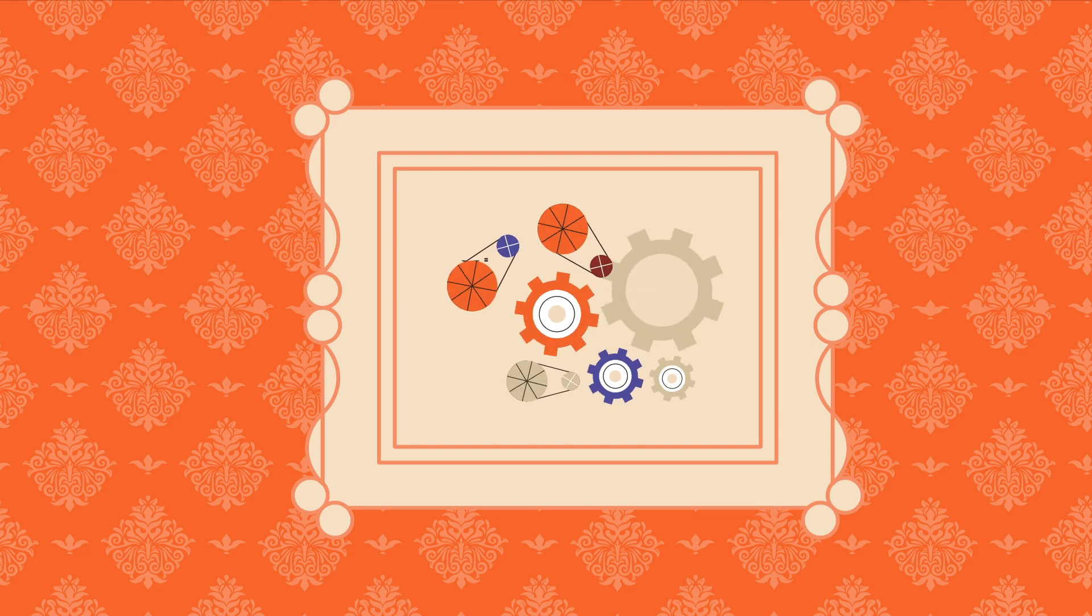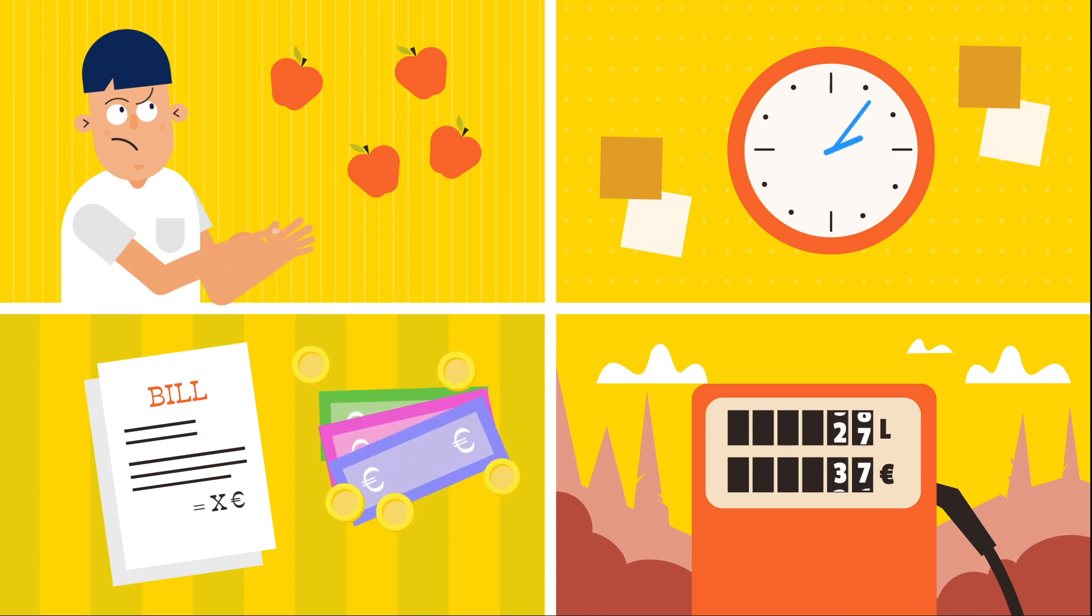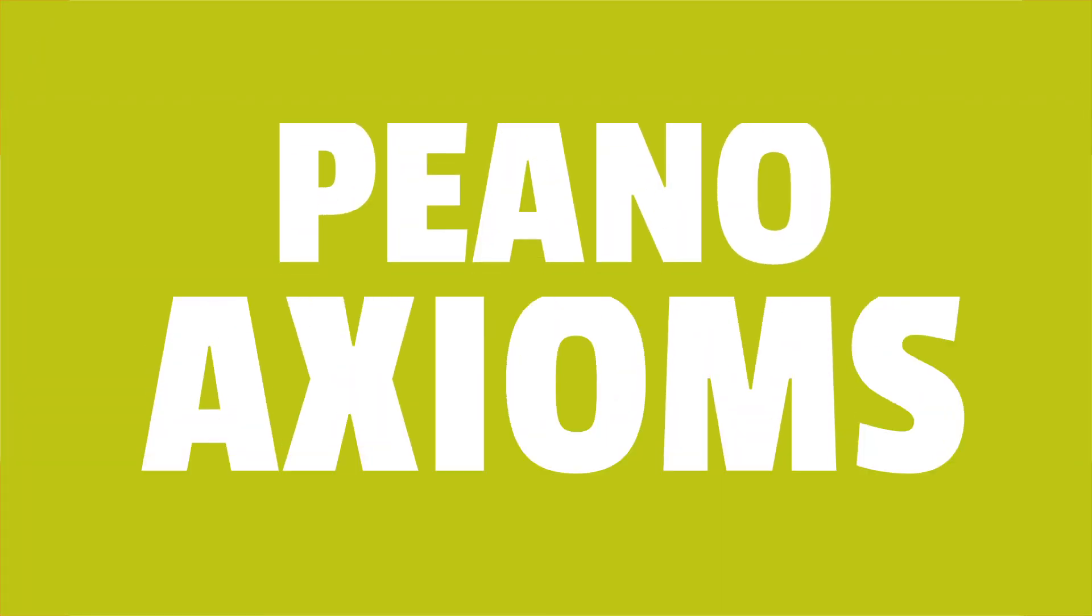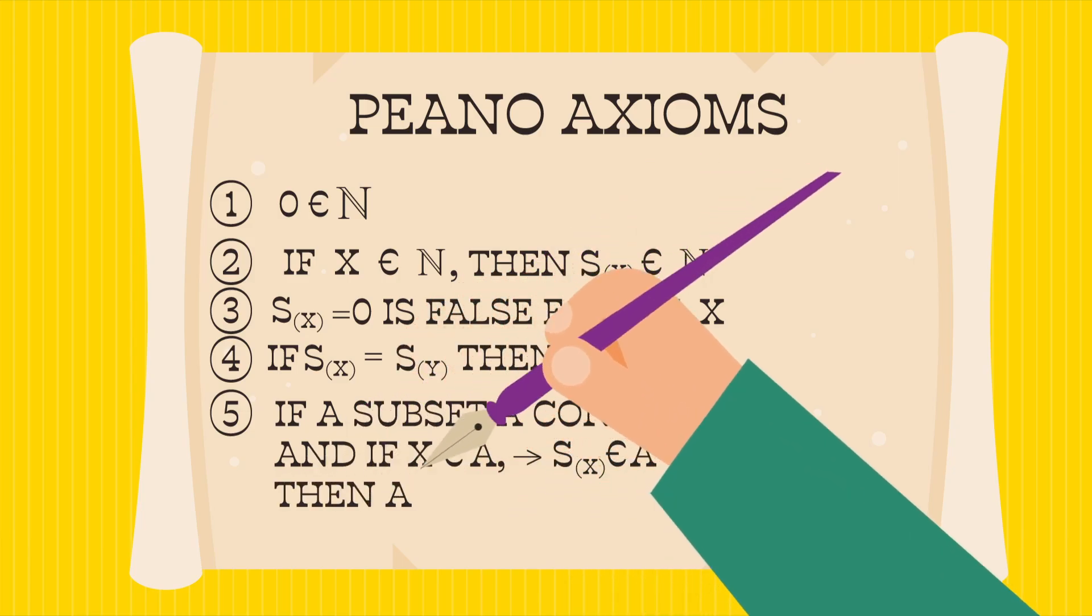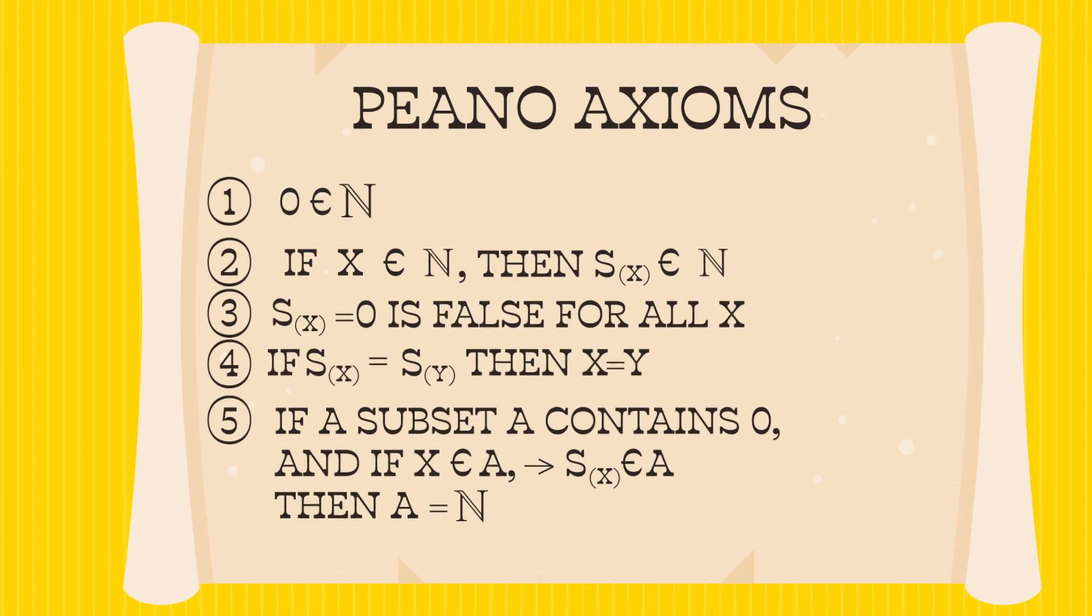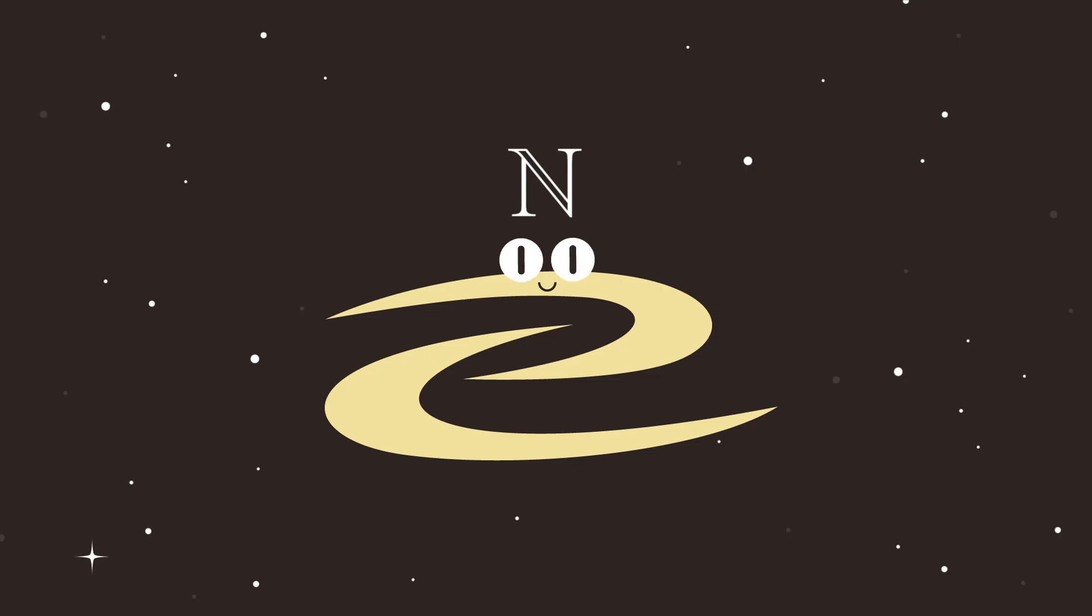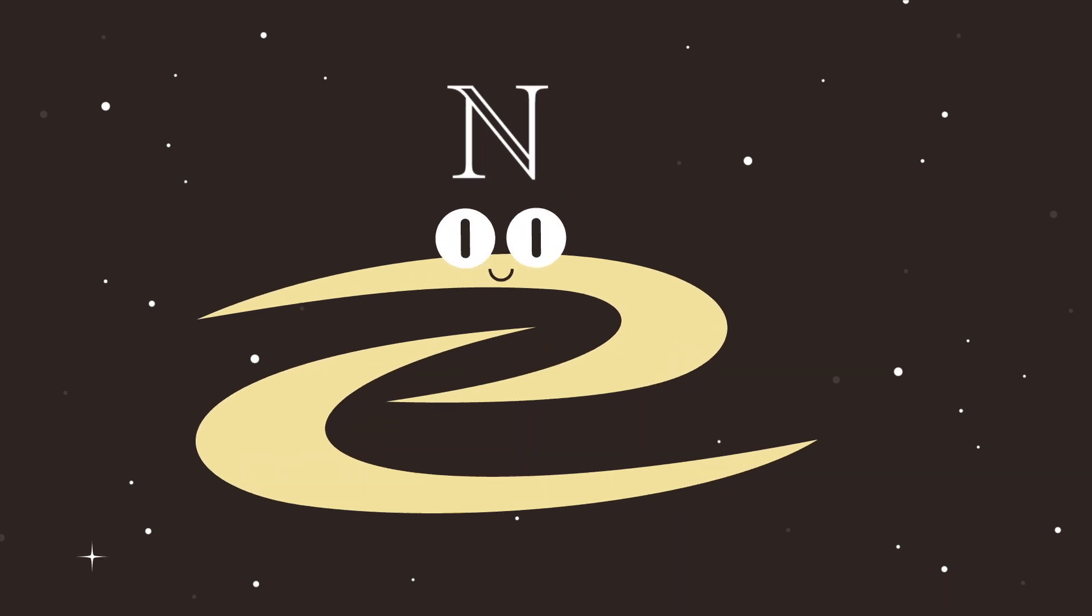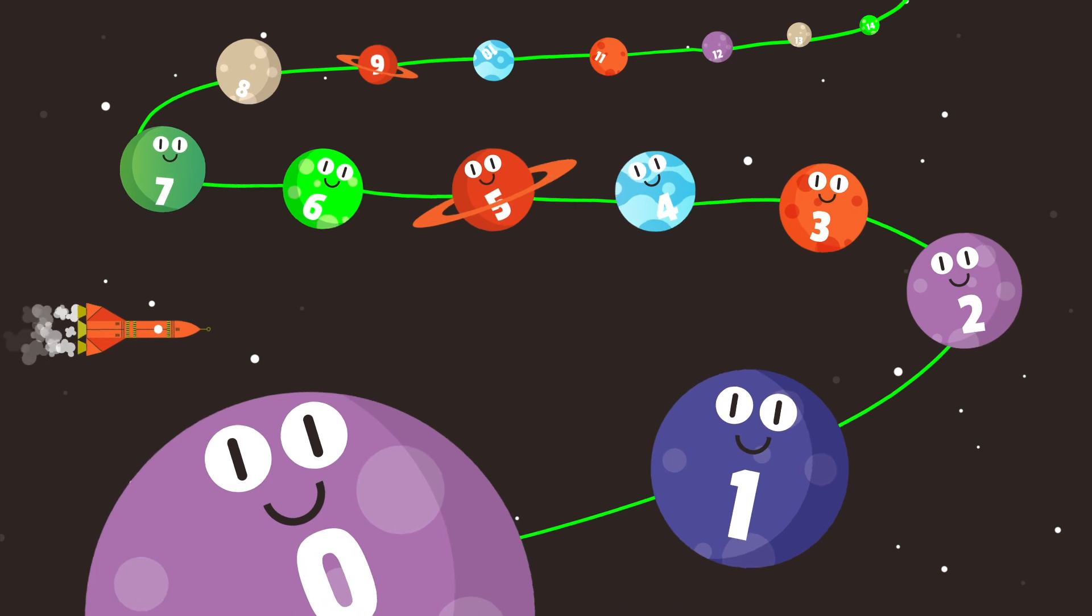The rules behind these numbers, the numbers we use every moment of every day to tell the time, add up the bills and fill up the car with petrol, are known as Peano axioms. The Peano axioms define a structure that can contain all the properties of natural numbers, where n signifies the set of natural numbers. Let's discover how mathematical theory is built from these elementary rules.